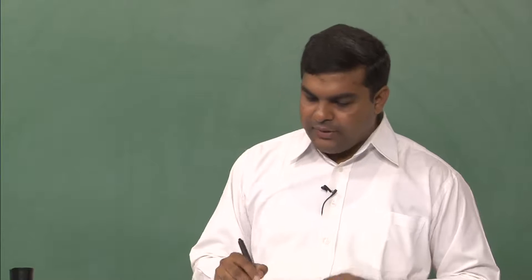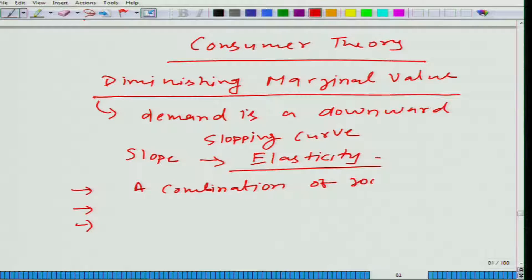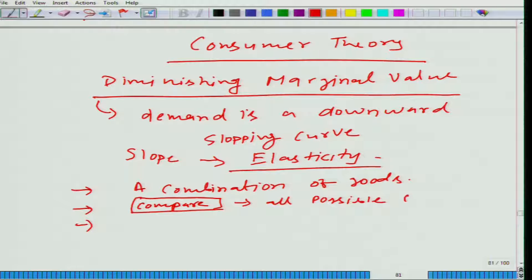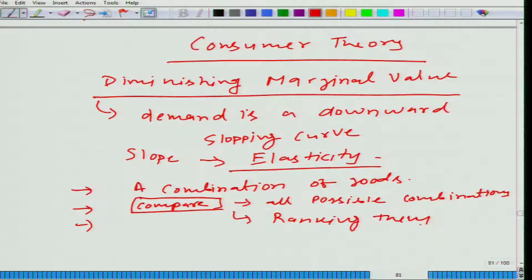According to preferences — we have not talked about preferences yet. What we do typically whenever we have a combination of goods that we can afford: we compare. Comparing is one important thing — you compare all possible combinations. And by comparing, you are basically ranking them. Comparison implies ranking, some sort of ordering: this one you like more, this one you like less, and you order them.